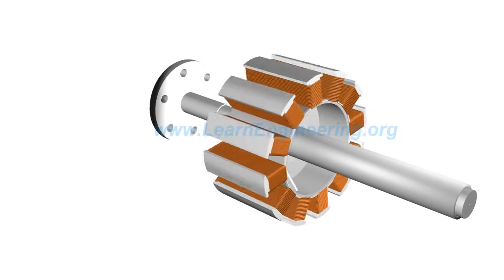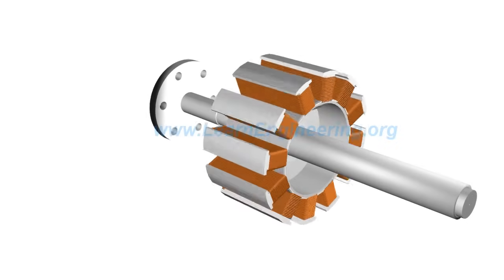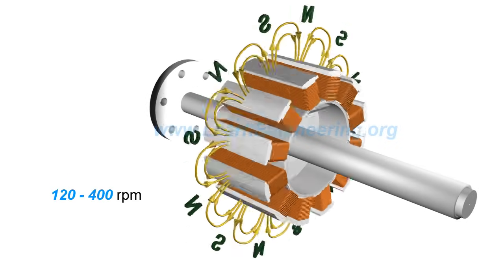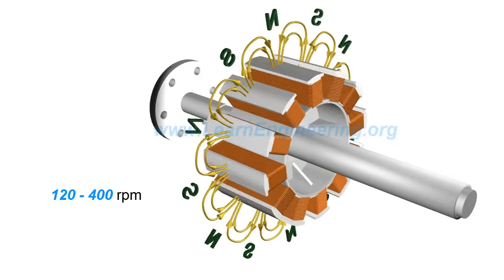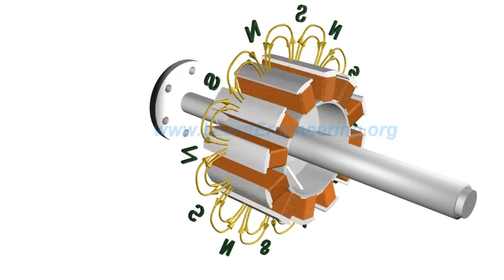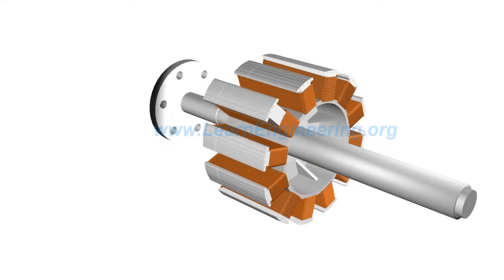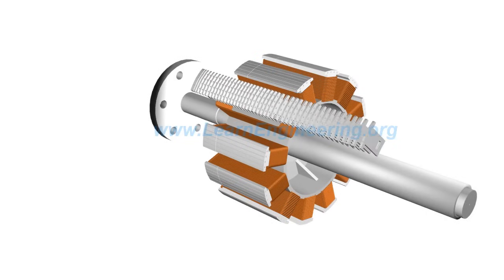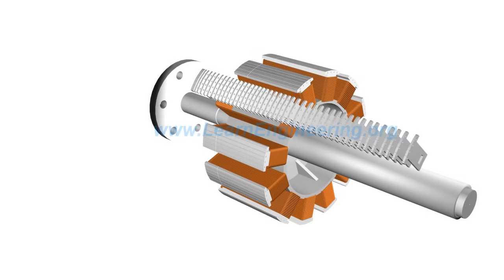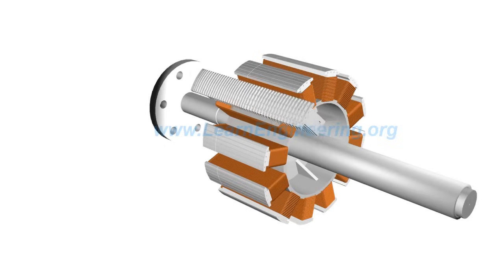Salient pole rotors are used when the prime mover rotates at a relatively lower RPM. The pole core is used to effectively transfer magnetic flux, and they are made with fairly thick steel lamina. Such insulated lamina reduces energy loss due to eddy current formation.